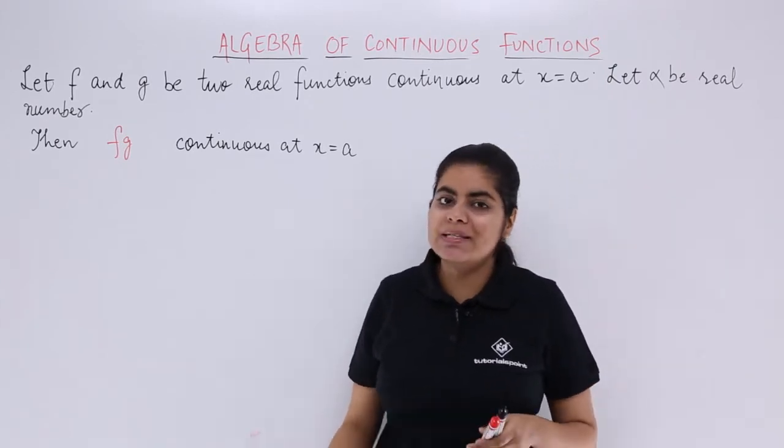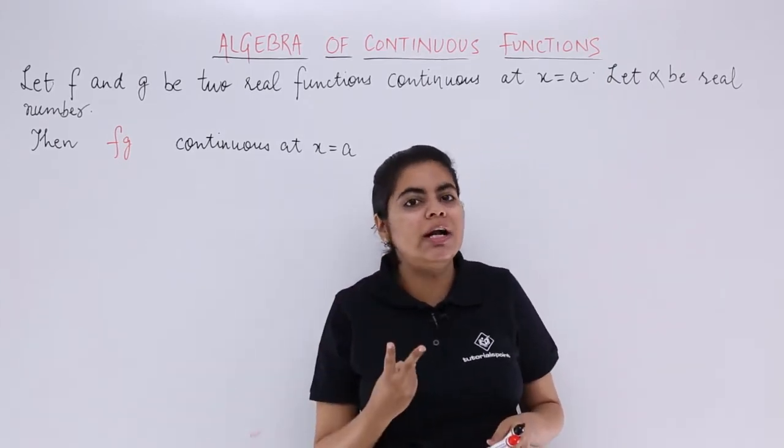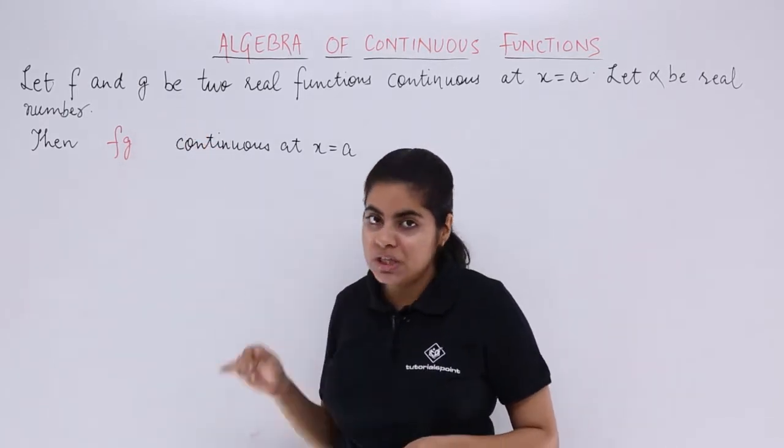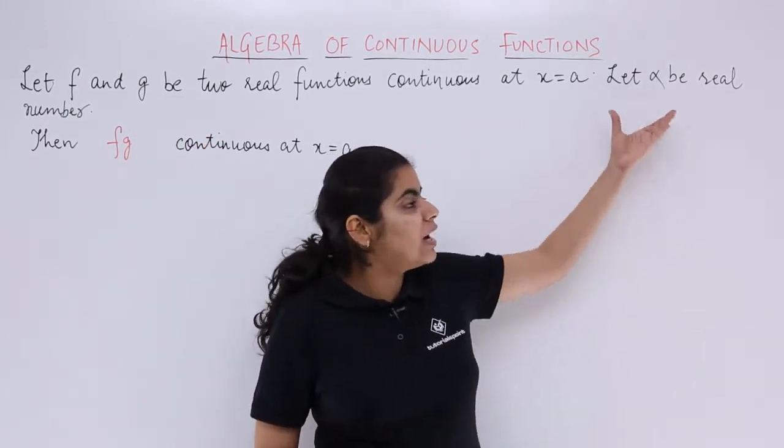The introduction is the same as in the previous videos. We have two continuous functions, two real functions continuous at x equals a. Their names are f and g, and we also have alpha as a real number.